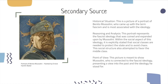Our second secondary source is a portrait of Benito Mussolini painted by Ernest Hamlin Baker. Historical situation: this is a portrait of Benito Mussolini, who coined the term fascism and is most associated with the ideology. Reasoning and analysis: this portrait represents the fascist ideology coined and expanded upon by Mussolini. Within the social aspect of the ideology, it is explicitly stated that social classes are needed to protect the state and avoid chaos, and this social structure also attempted to favor the middle class. Point of view: this picture is meant to show Mussolini — connected to the fascist ideology — representing a view into the past and the ideology he stood for.